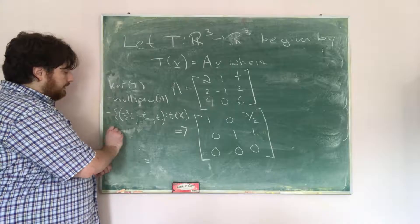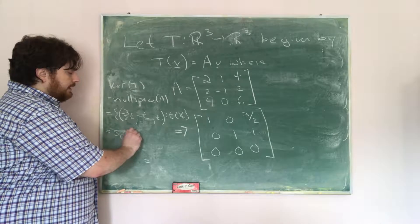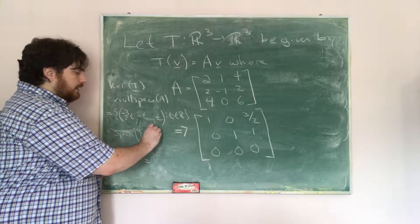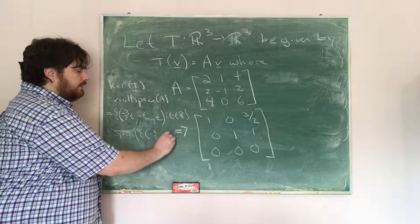And so we can go a step further and say, this is the span of the set of vectors, where if we plug in 1 for T, we get negative 3 halves, negative 1, 1.